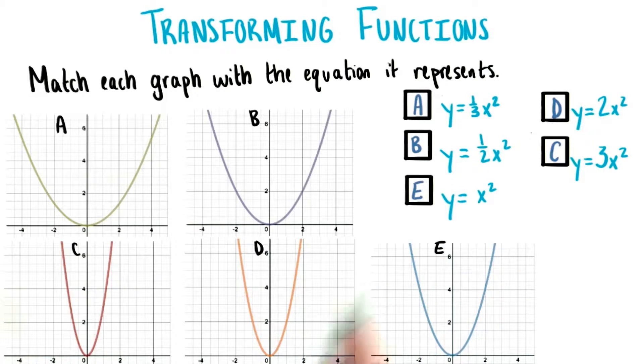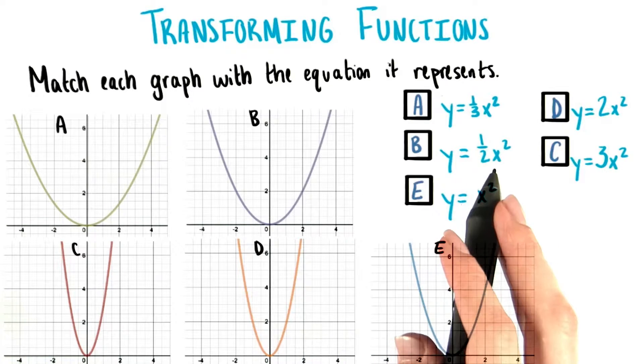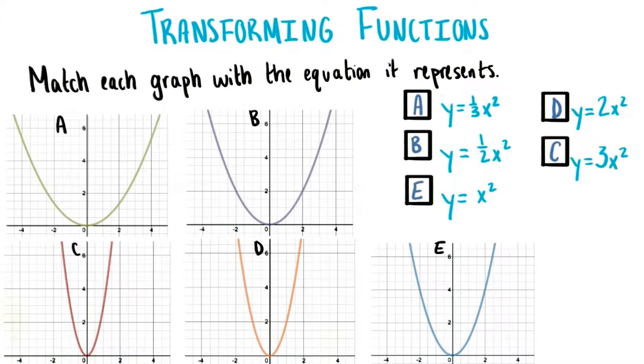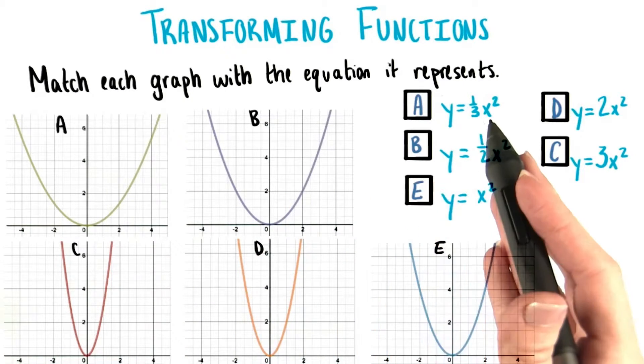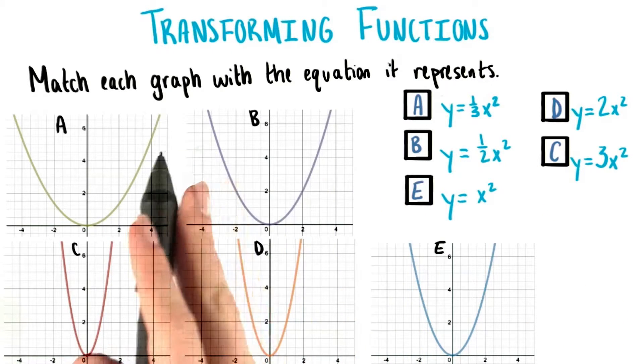Before, when we talked about parabolas, we said that changing the coefficient out in front of the x squared changed the width of the parabola. Putting a fraction out in front, like 1/3 or 1/2, made the graph really wide.